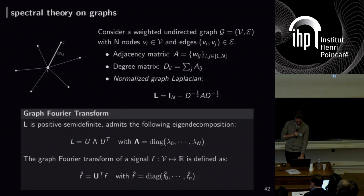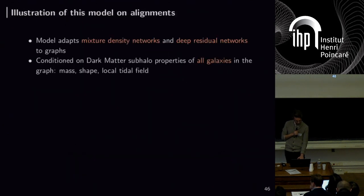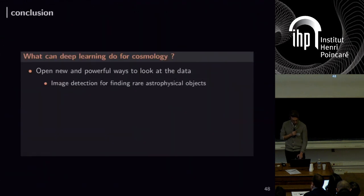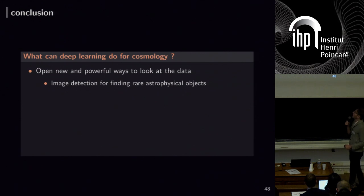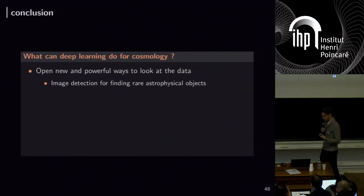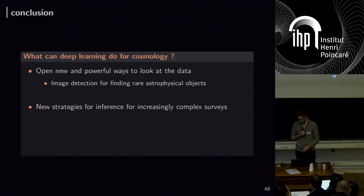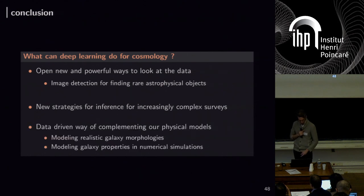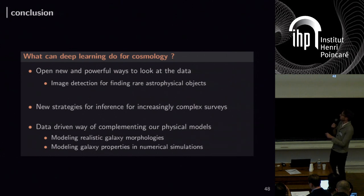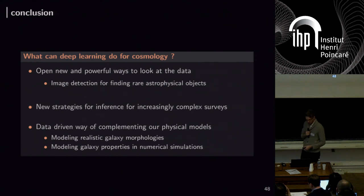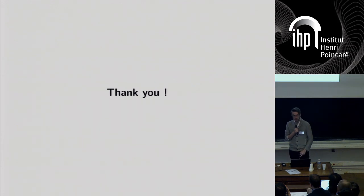I'll skip my last section on graphs — ask me about it afterwards. To conclude: what can deep learning do for cosmology? It opens new and powerful ways to look at data, such as extracting gravitational lenses at scale. It enables new strategies all the way to cosmological inference. And a very interesting aspect is the ability to learn from data itself models for signals that are too complicated to derive from first principles. With that, I'll stop here — thank you.